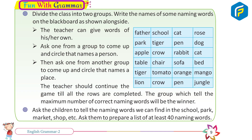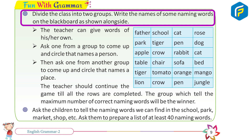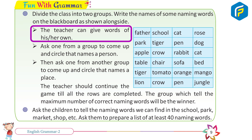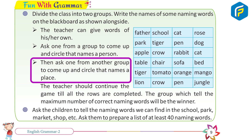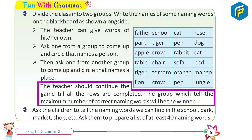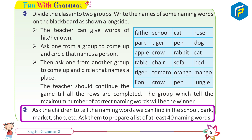Fun with Grammar: Divide the class into two groups. Write the names of some naming words on the blackboard. Ask one from a group to come up and circle a name that is a person, then ask one from another group to circle a name that is a place. The teacher continues the game until all rows are completed. The group with the maximum number of correct naming words wins. Ask children to list naming words found in school, park, market, shop, etc. — prepare a list of at least 40 naming words.